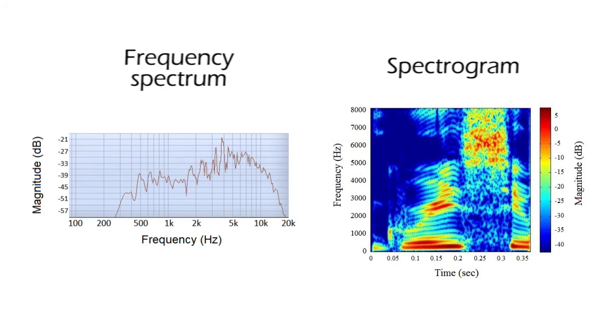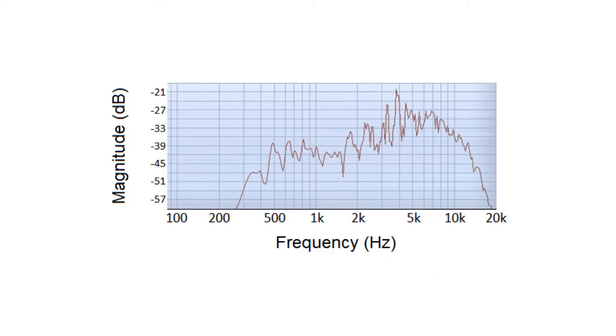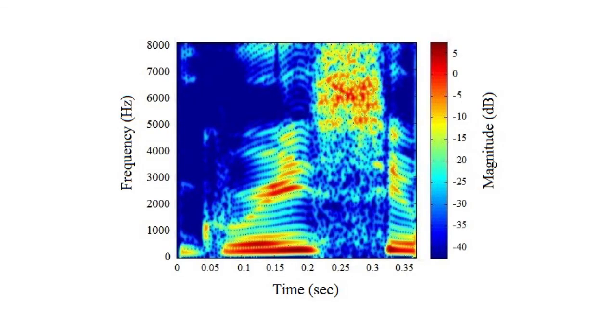A frequency spectrum and a spectrogram are slightly different. The frequency spectrum allows us to see the frequencies in a single instant of time, with the frequencies in the horizontal axis and the magnitude in the vertical axis.